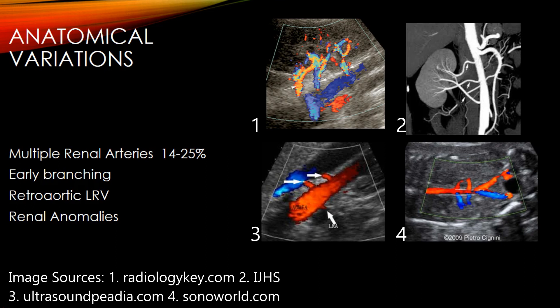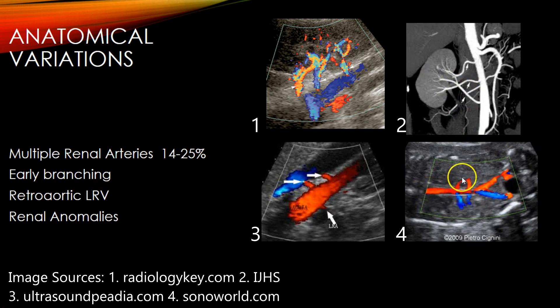One important thing to know about renal artery Dopplers is that there are anatomical variations. Many people have more than one renal artery — 14 to 25 percent of the population has multiple renal arteries on one or both sides. You can see one patient here with three renal arteries on CT angio, and a fetal sonogram showing two renal arteries on both sides of the aorta.